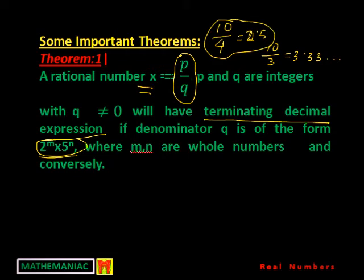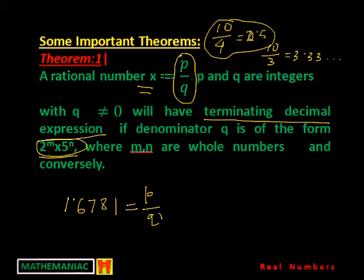Conversely, meaning is that if you have a terminating decimal expression, whatever it would be, since it is a rational number, you can always express this in the form of p by q. Then very definitely q will be containing 2 or 5 or maybe both as prime factors, and there will be absolutely no other factors when you keep this in the standard form. That's the converse.